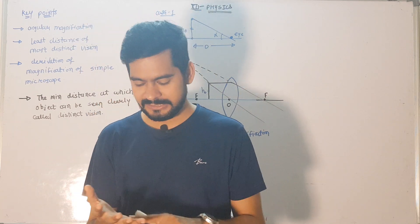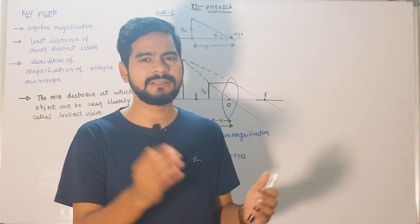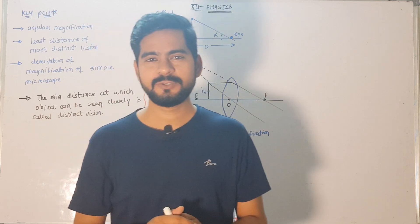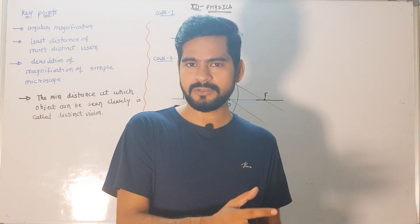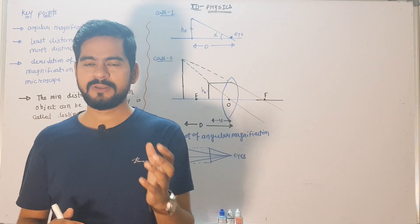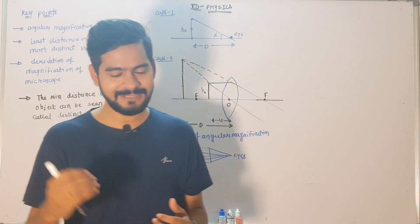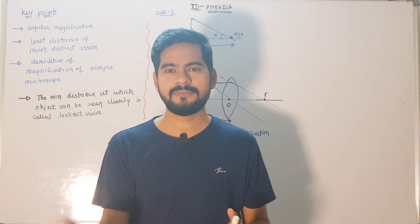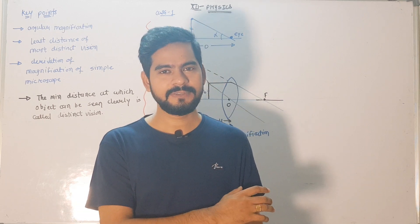In the previous videos we discussed reflection, refraction, the mirror formula, lens formula, lens maker's formula, refractive index of a prism, and refraction through curved surfaces. If anyone wants to learn those previous concepts, search for this channel 'Sachin Sir Physics' on YouTube, subscribe, and go to the playlist where all previous videos are available. The main motto of this channel is clearing the concept of physics so you fall in love with it.